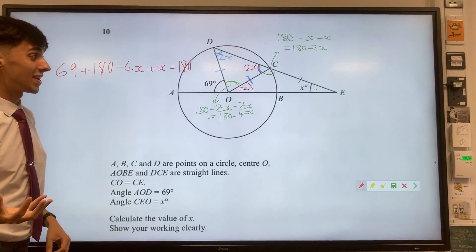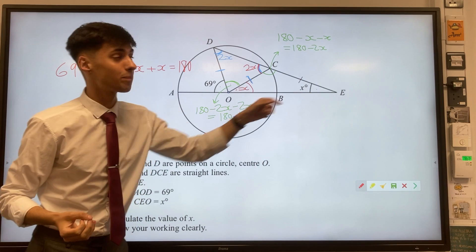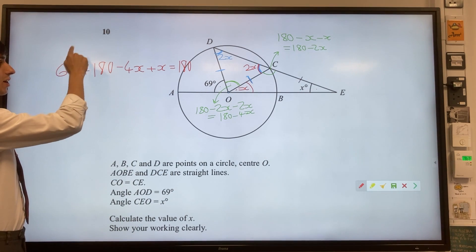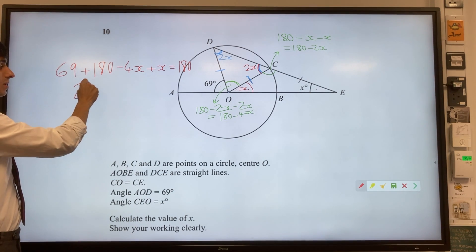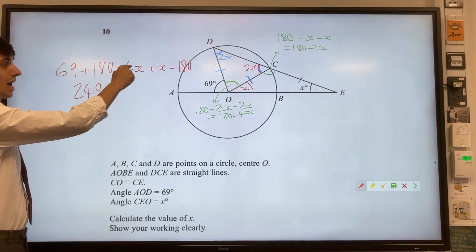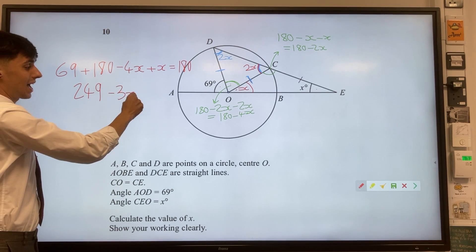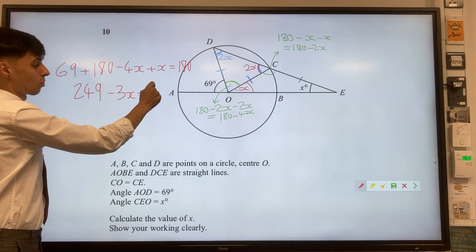We want to solve this, of course, to find x because this is the same x as what we want in the corner. So we've got 69 plus 180, so that should give you 249, take away 4x plus x should be take away 3x, to get to 180.